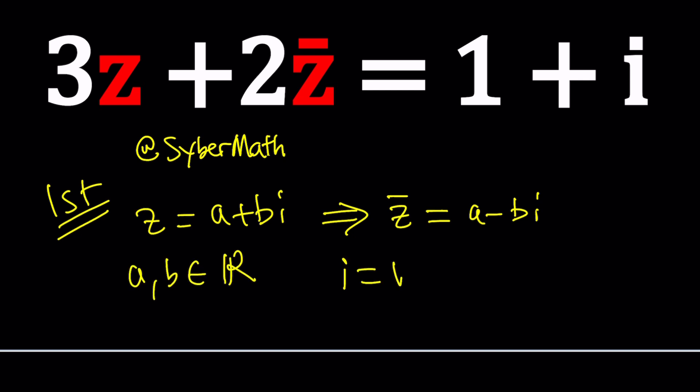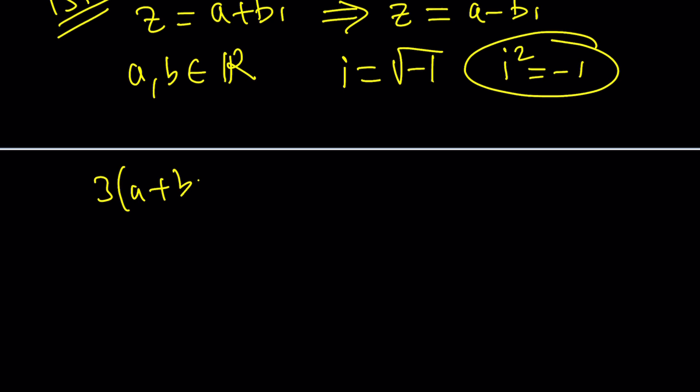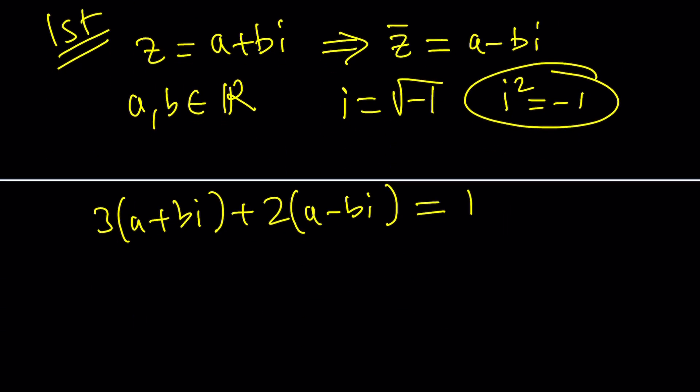And i is the square root of negative one, which you can also write as i² = -1. I say the square root because this is considered the principal square root of negative one. Let's go ahead and plug this into our original problem. 3 times (a + bi) plus 2 times (a - bi), and you want this to equal 1 + i. Let's distribute. 3a plus 2a is 5a. 3b and minus 2b gives us just bi.